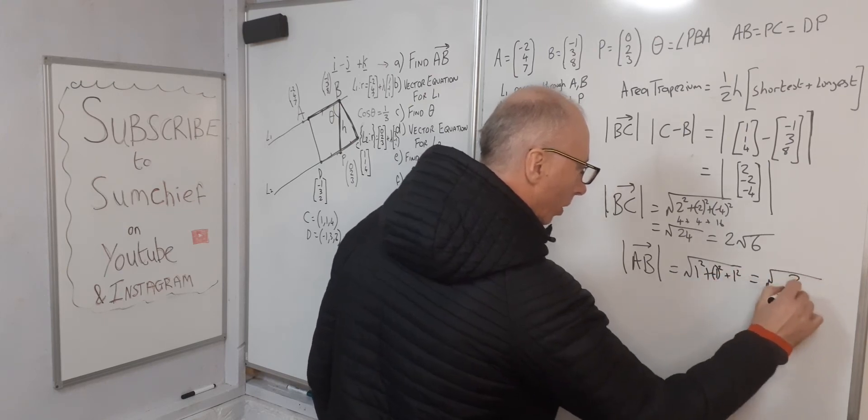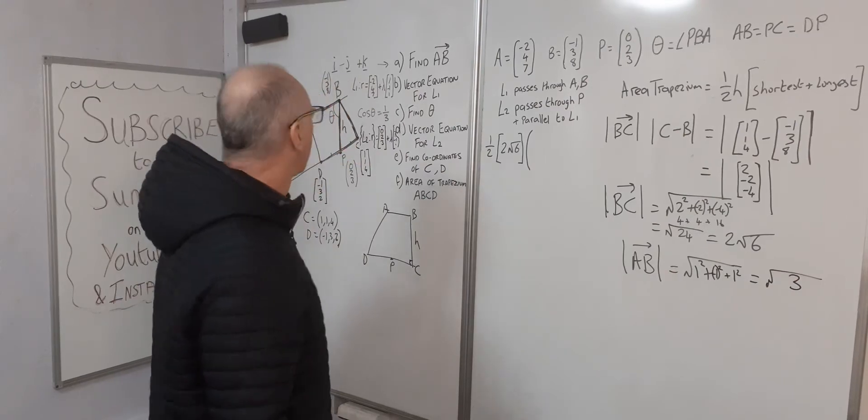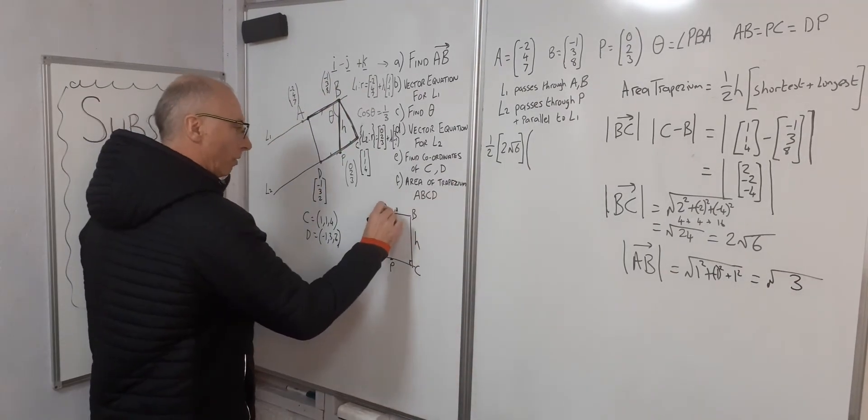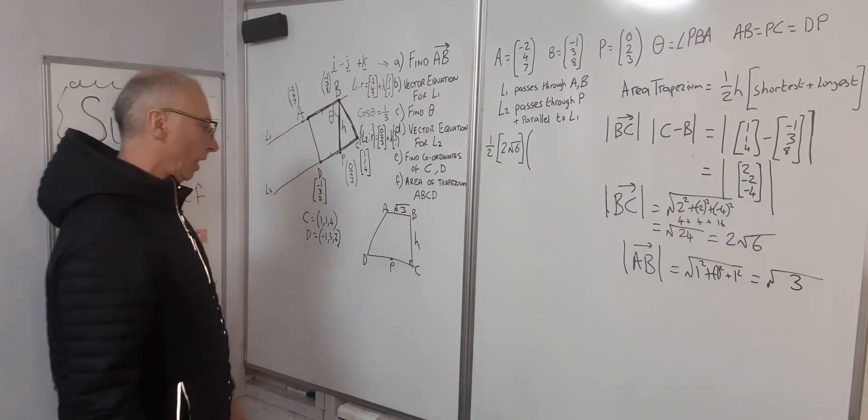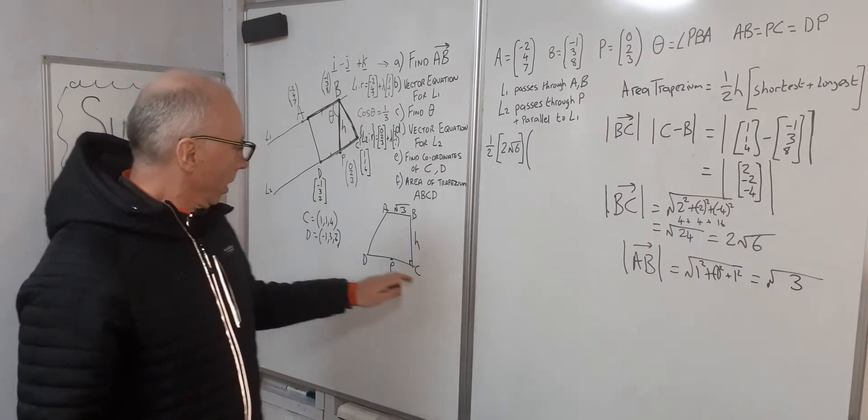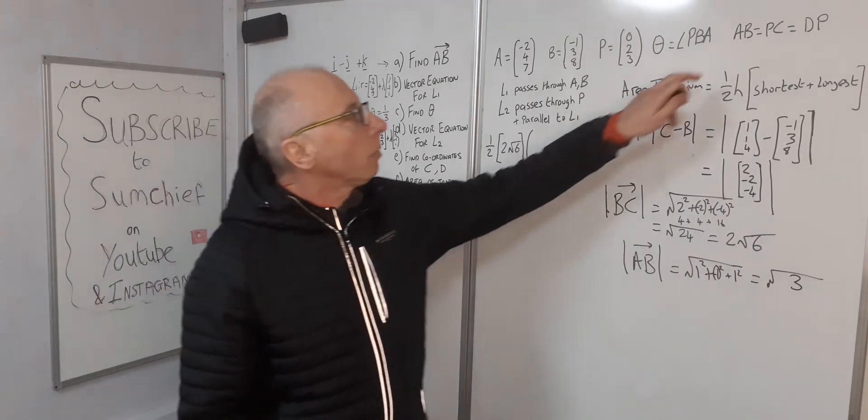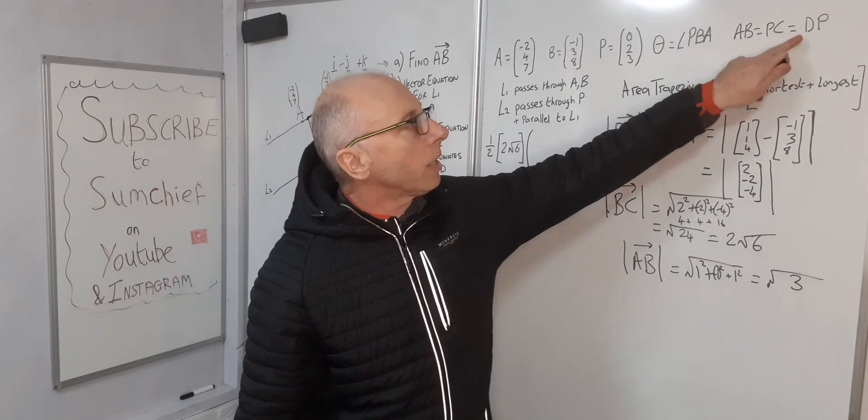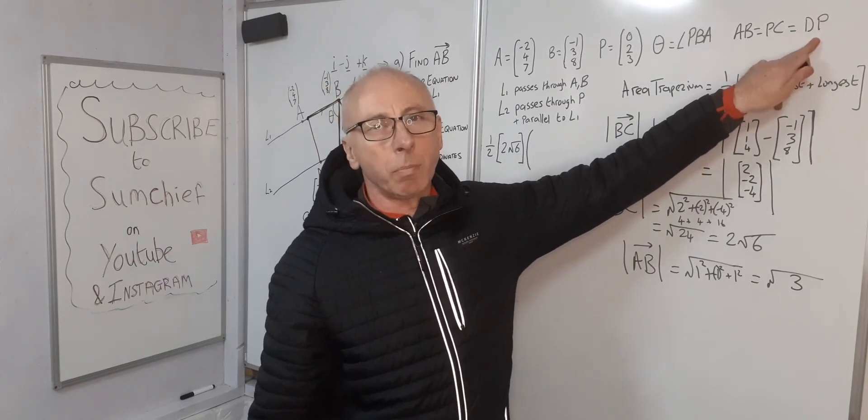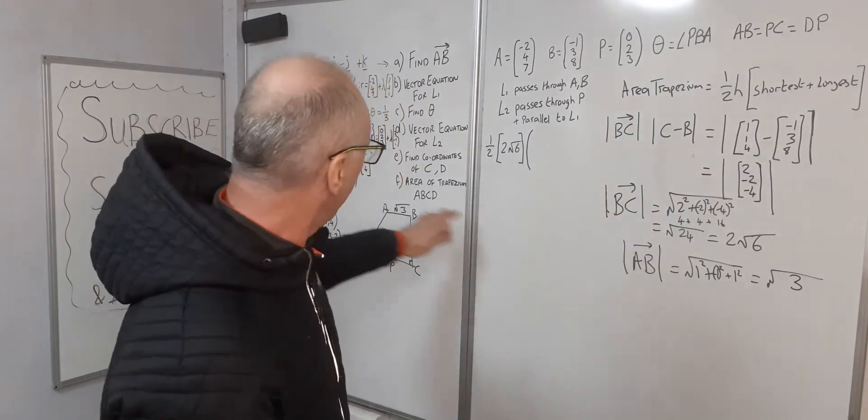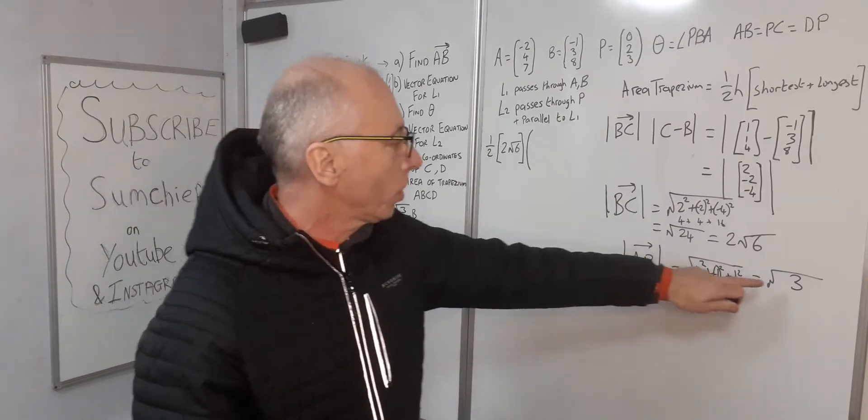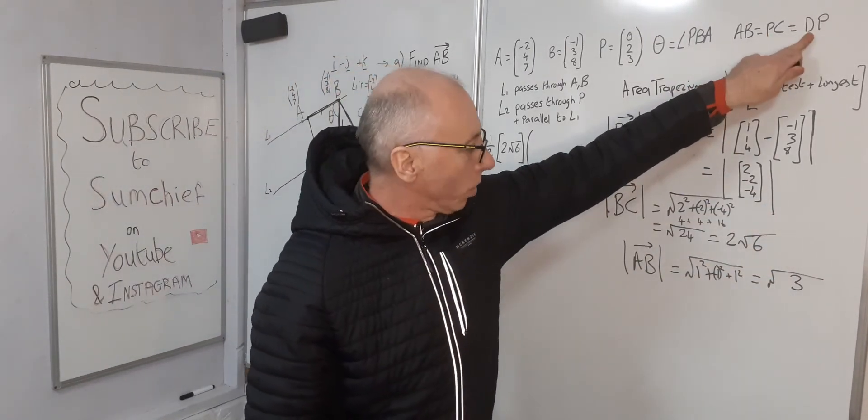So √3. This one here is √3. Now, before we calculate PC and DP, we know that AB is the same as PC and DP, so we save ourselves a bit of time. Instead of going through all the calculations, we just know that these two are also √3. Therefore, the whole line is 2√3.